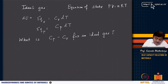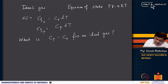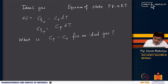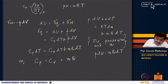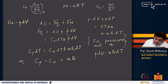In the previous lecture we introduced heat capacity and told that there are two types: heat capacity at constant volume Cv and heat capacity at constant pressure Cp. We introduced enthalpy and discussed the difference between Cp and Cv for an ideal gas. Cp is del H del T at constant pressure, and Cv is del U del T at constant volume.